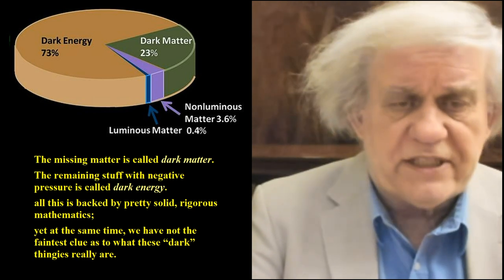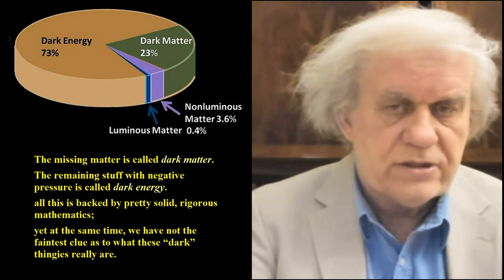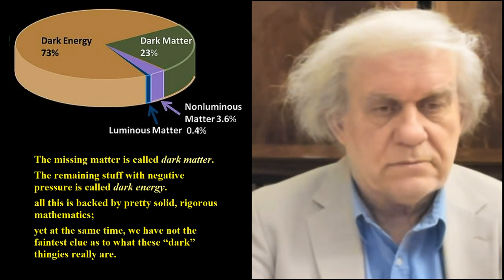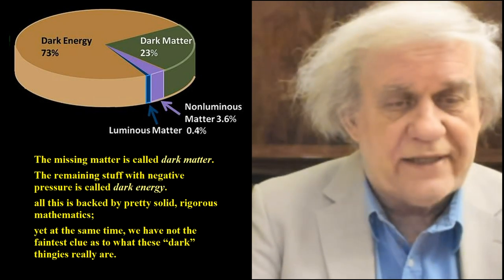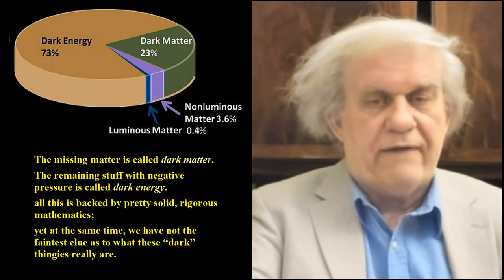He says, all this is pretty solid, rigorous mathematics. So what does mathematics have to do with things? We're talking about things here. He says, it's rigorous because we have it mathematically down pat. Yet at the same time, we have not the faintest clue as to what these dark thingies really are. What a lesson. They have no clue what they have, but it's been proven with mathematics. You have the whole establishment out there believing in dark matter because they've proven it mathematically to exist.